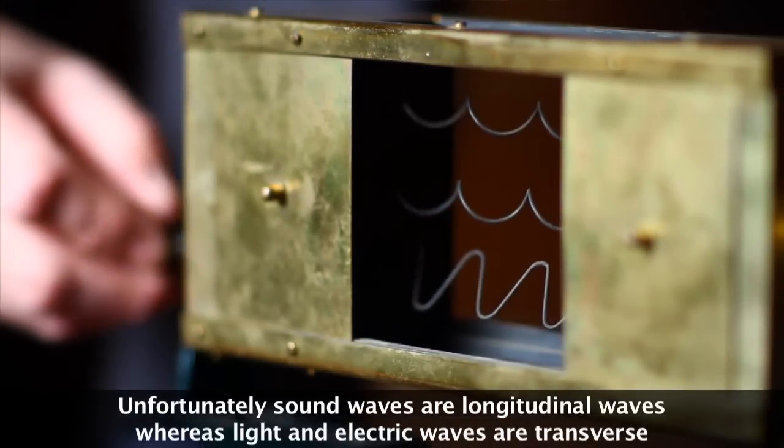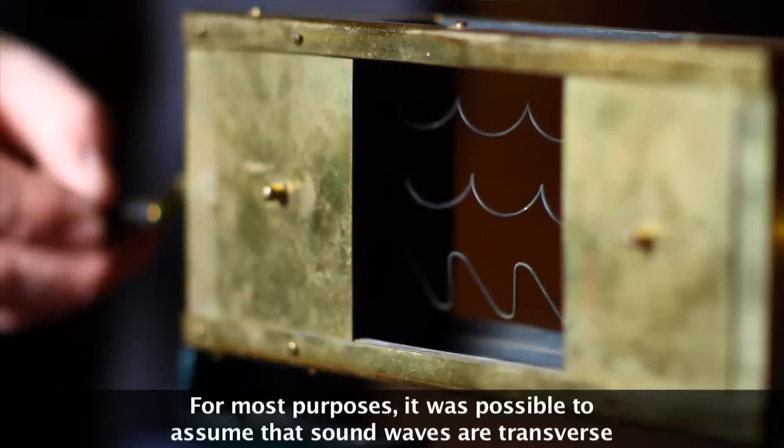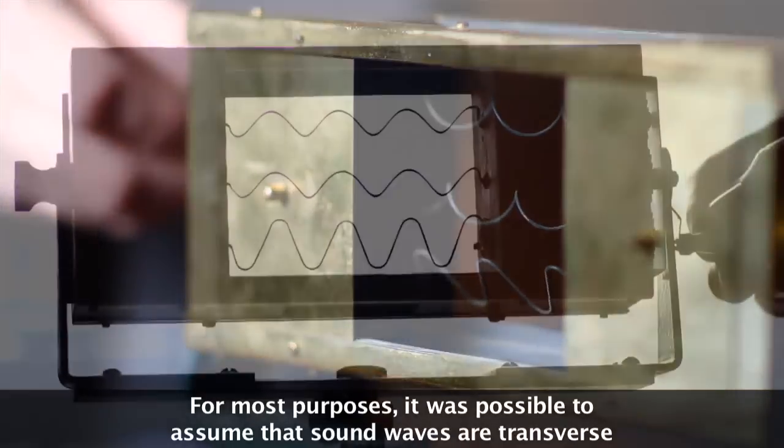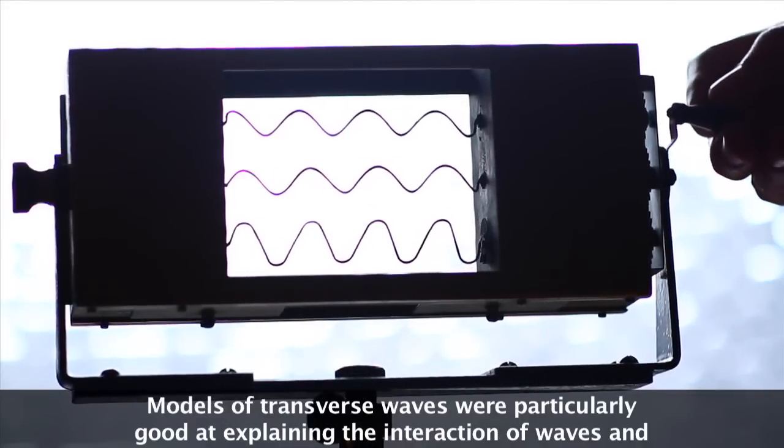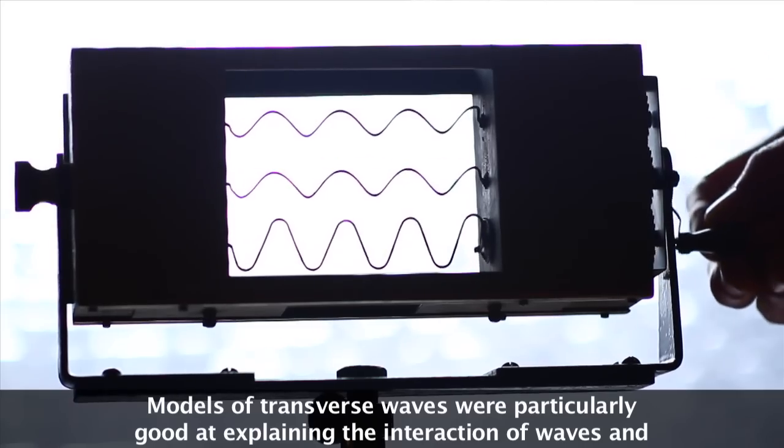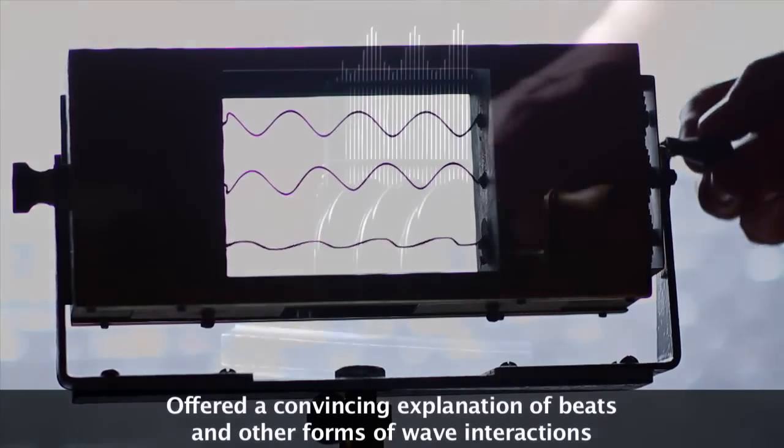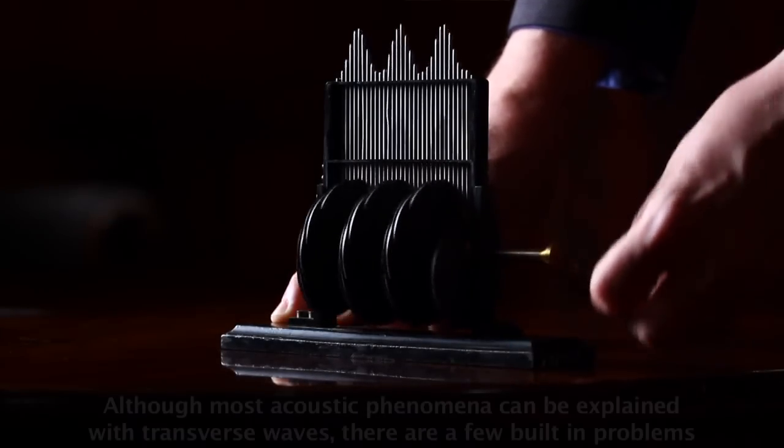Unfortunately, sound waves are longitudinal waves, whereas light and electric waves are transverse. For most purposes it was possible to assume that sound waves are transverse, and a number of demonstrations were developed to make that point. Models of transverse waves were particularly good at explaining the interaction of waves and offered convincing explanations of beats and other forms of wave interactions.